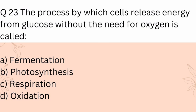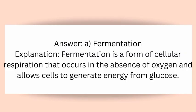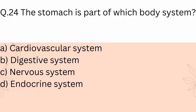Question 23: The process by which cells release energy from glucose without the need for oxygen is called? A) Fermentation, B) Photosynthesis, C) Respiration, D) Oxidation. Answer: A) Fermentation. Explanation: Fermentation is a form of cellular respiration that occurs in the absence of oxygen and allows cells to generate energy from glucose.